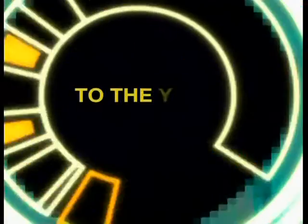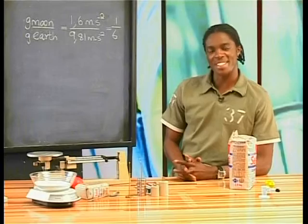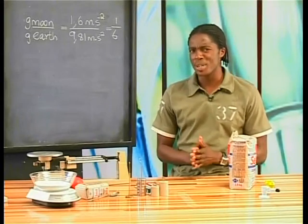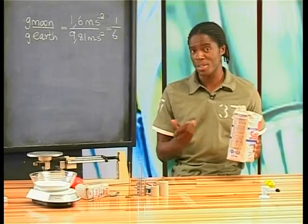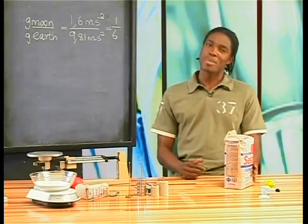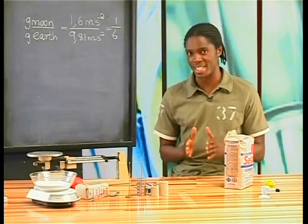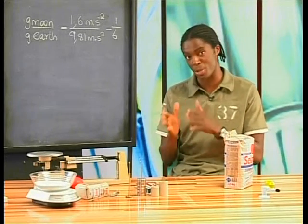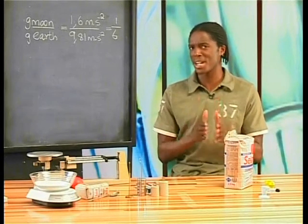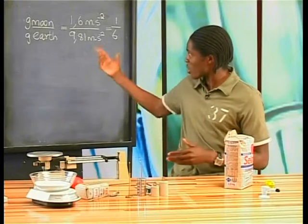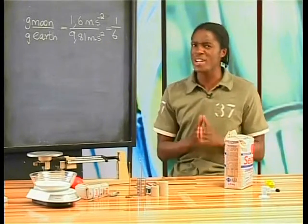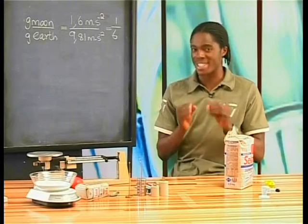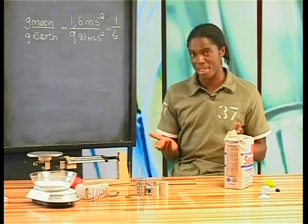Let's go see what Aaron is up to in the lab. Hey guys, what do you think is going to be easier to lift — this 2.5 kilogram bag of sugar on earth or on the moon? In fact, the weight on the moon is directly related to the gravitational acceleration on the moon. And since the gravitational acceleration on the moon is one sixth of the gravitational acceleration on earth, the weight of any object will also be one sixth less on the moon than on earth.